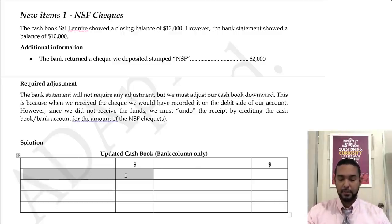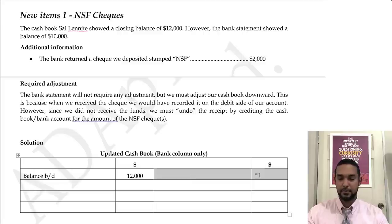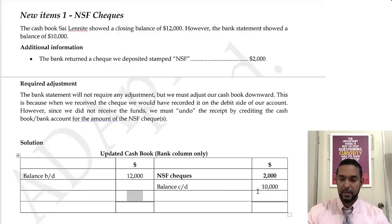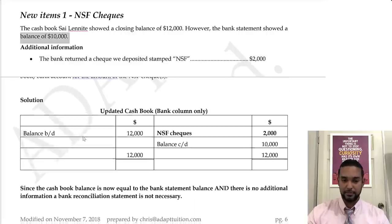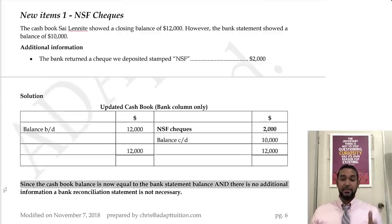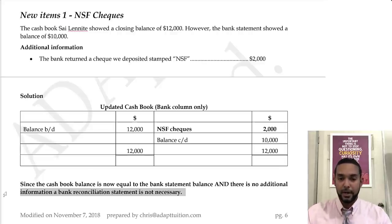We have a balance of $12,000 in our cash book. The bank sent back the check for $2,000, so we go on the credit side of the cash book and put NSF check for $2,000. When we balance it off we get $10,000, which matches the bank balance. Since the cash book balance is now equal to the bank statement balance and there's no additional information, a bank reconciliation statement is not necessary. NSF checks will normally appear inside a larger question.